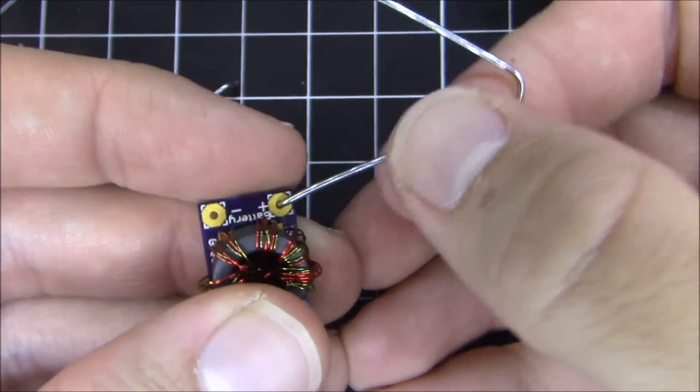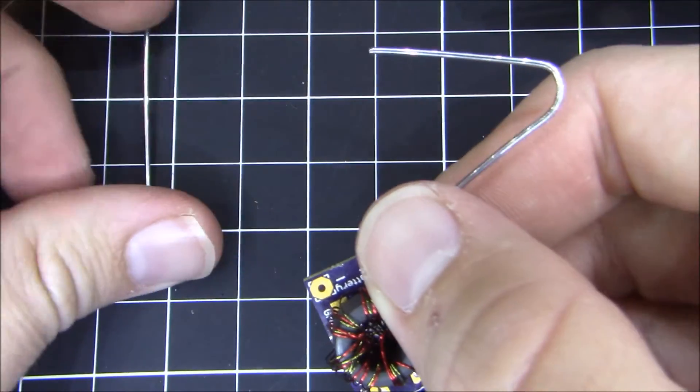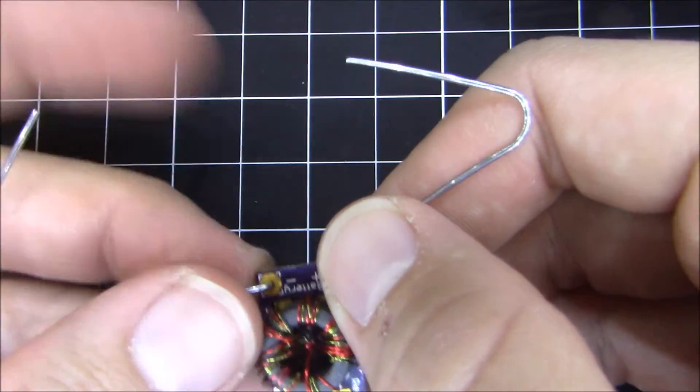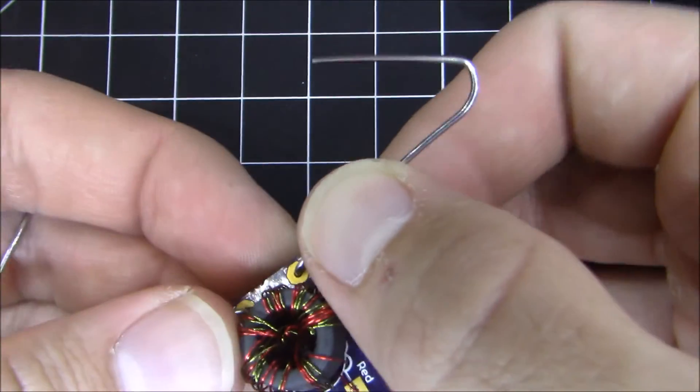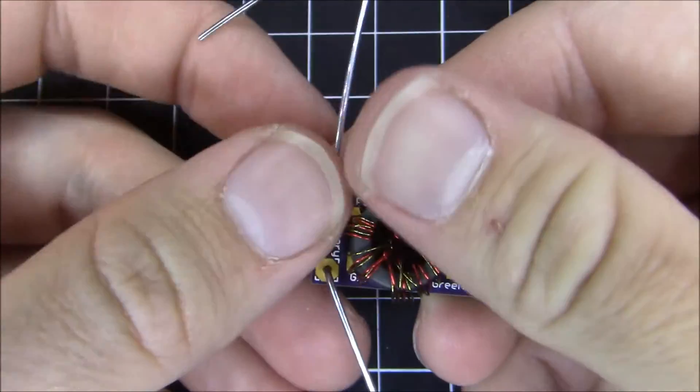And we're going to stuff those into the PCB. You might need to wiggle it a little bit to get it to fit through the hole. But once it's fit, it kind of moves back and forth, allowing you to adjust how wide the gap is between the two paper clip leads so you can adjust it for your particular battery size.